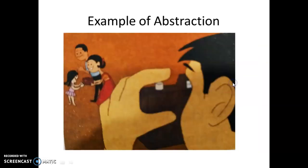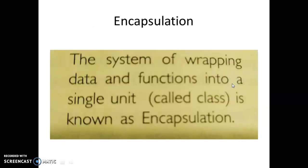Then come to the next point: this is Encapsulation. The system of wrapping data and functions into a single unit — that unit is called Class — is known as Encapsulation. That means some data, suppose 5 and 6, and function add: 5 and 6 we want to add. So this 5, 6, and add, we keep in a single unit. That unit is called Class and the mechanism is called Encapsulation.